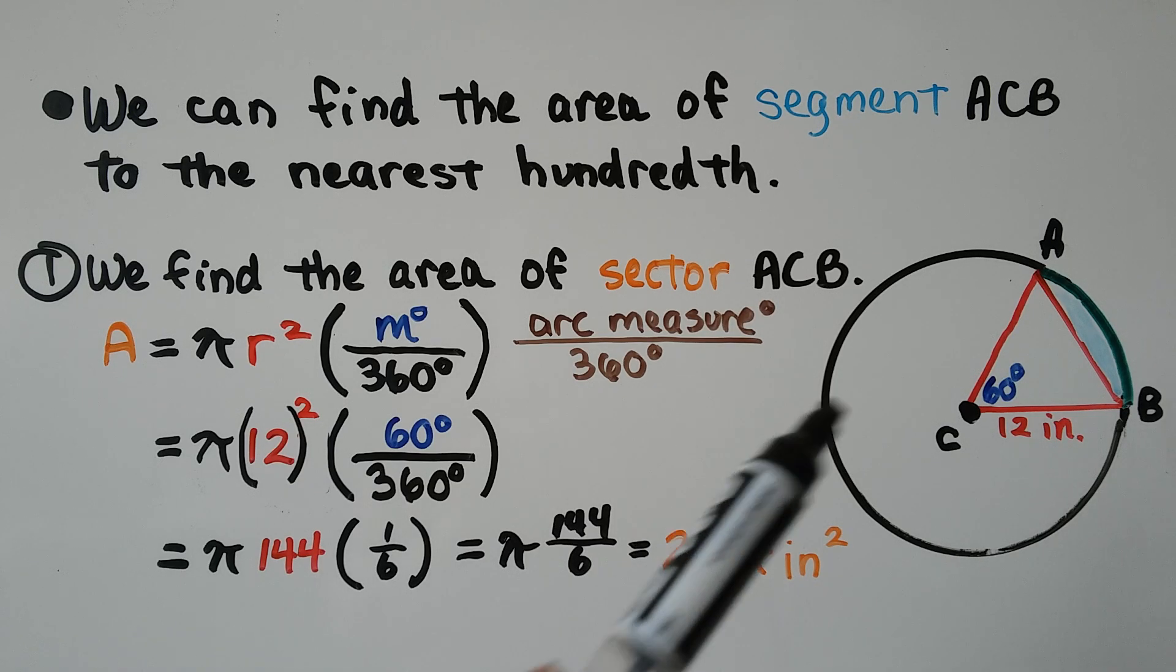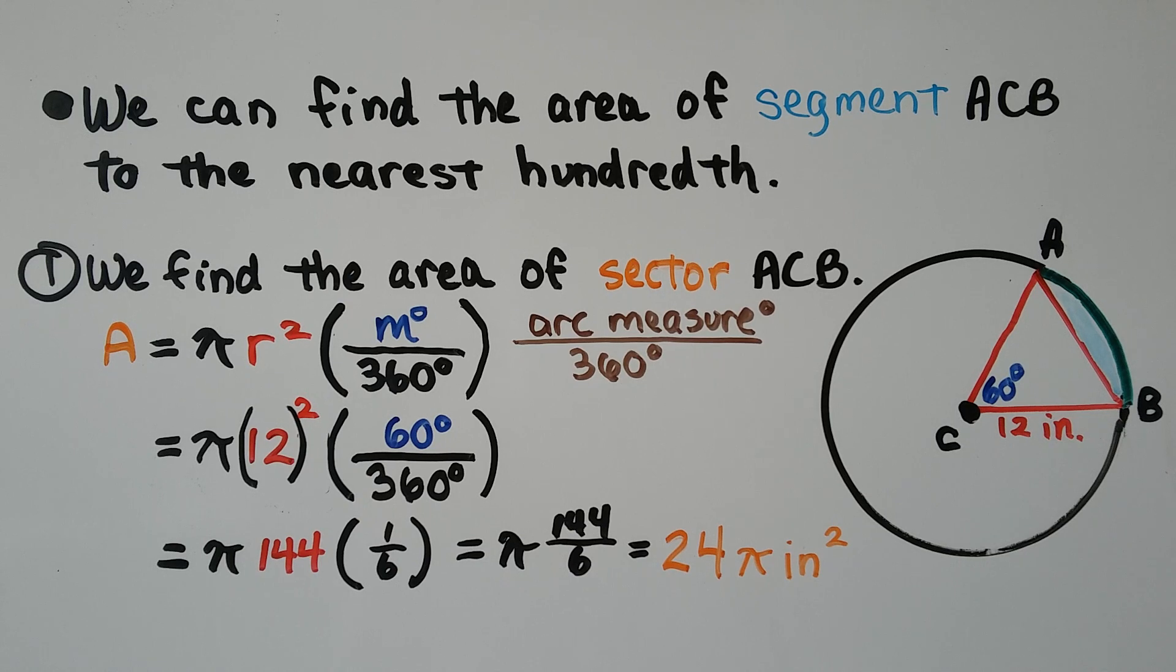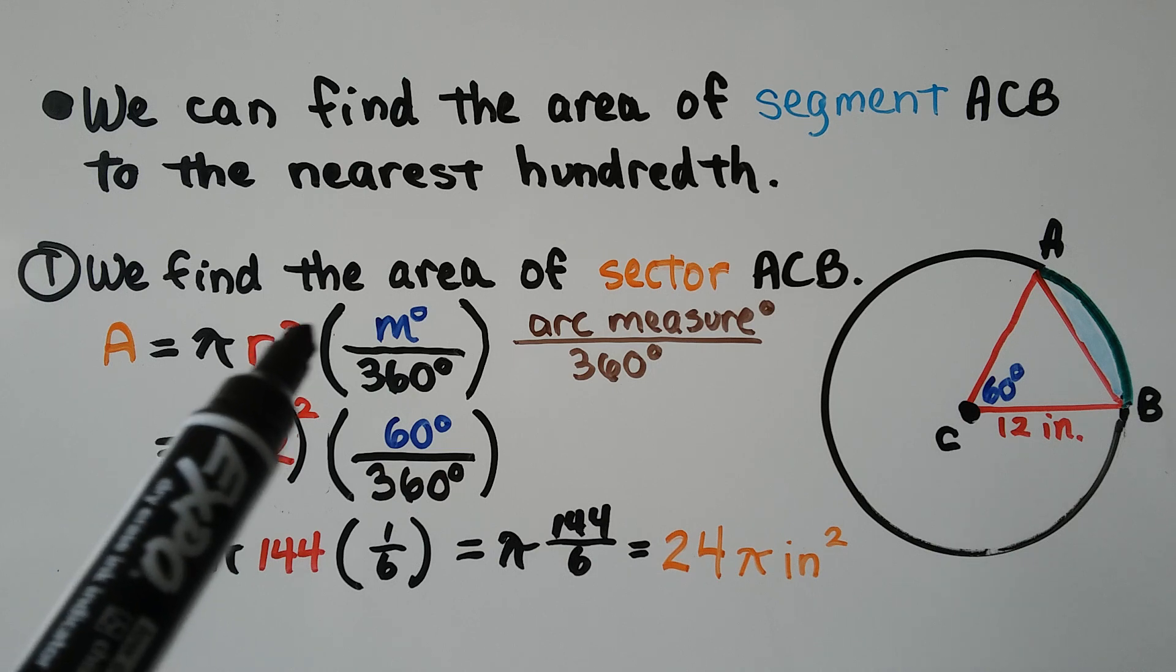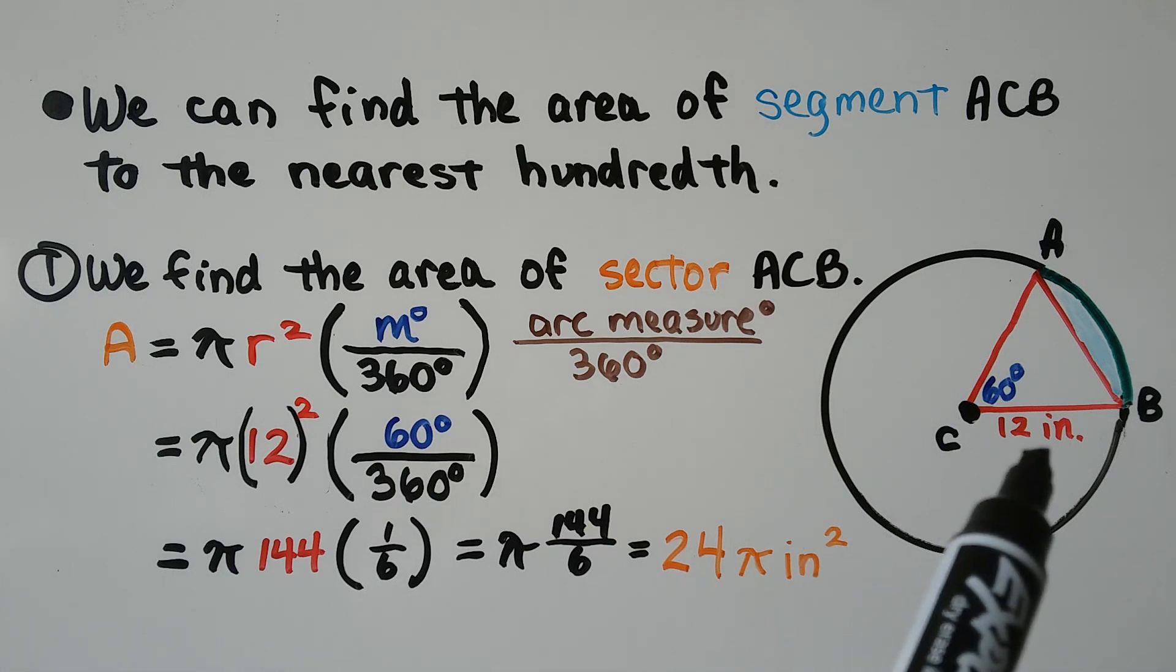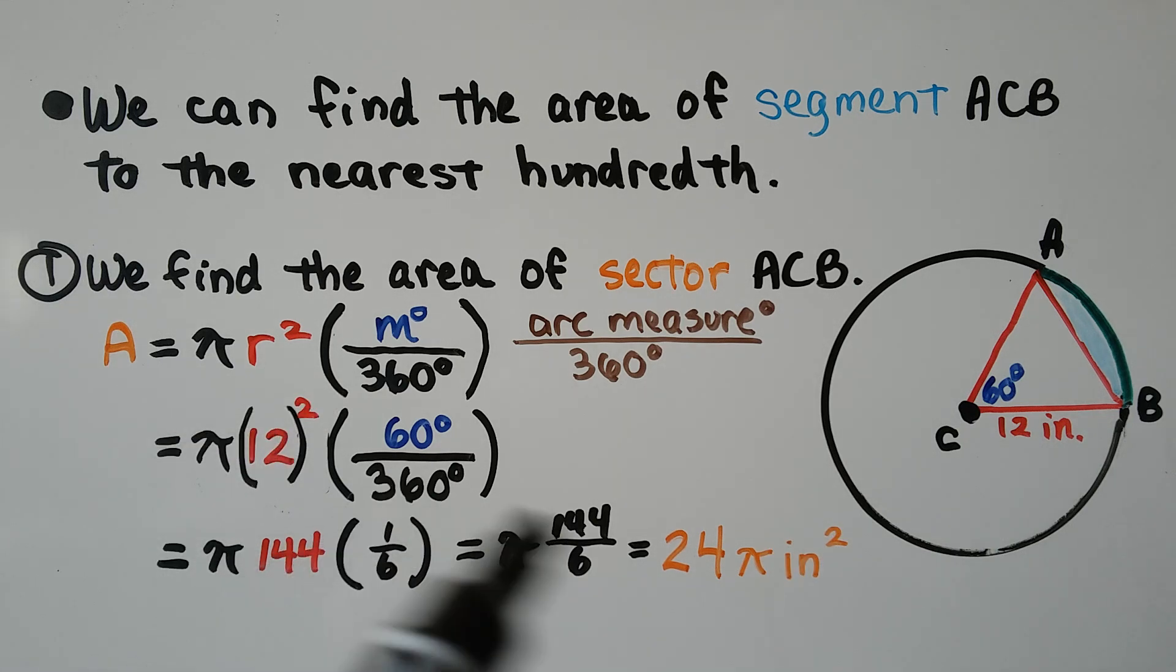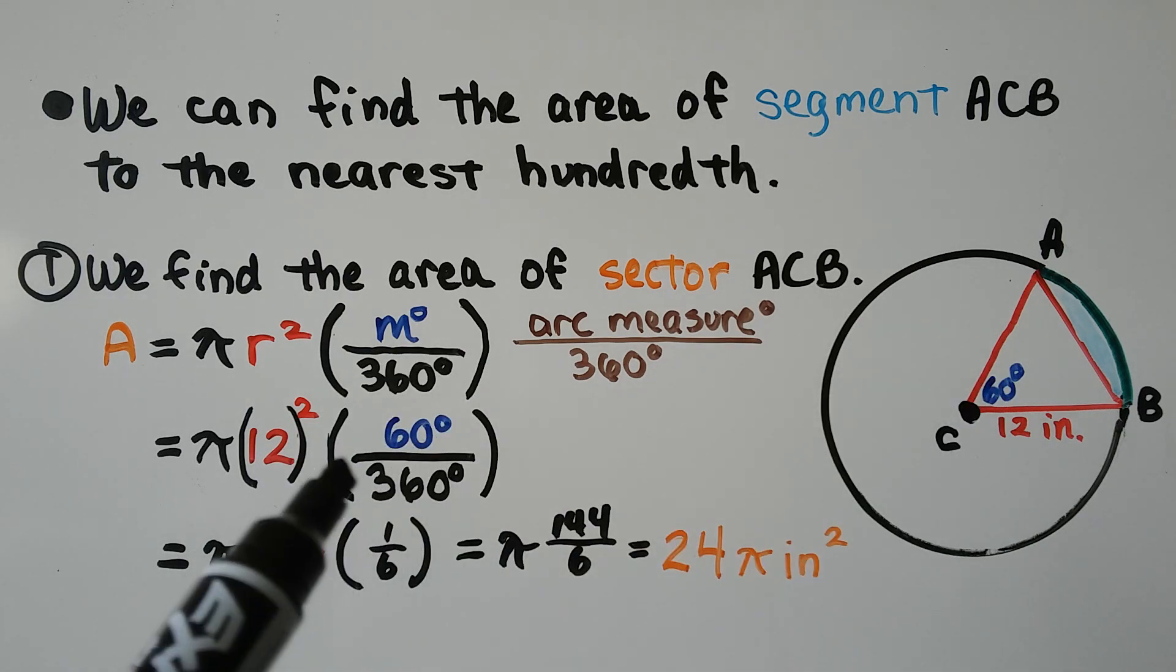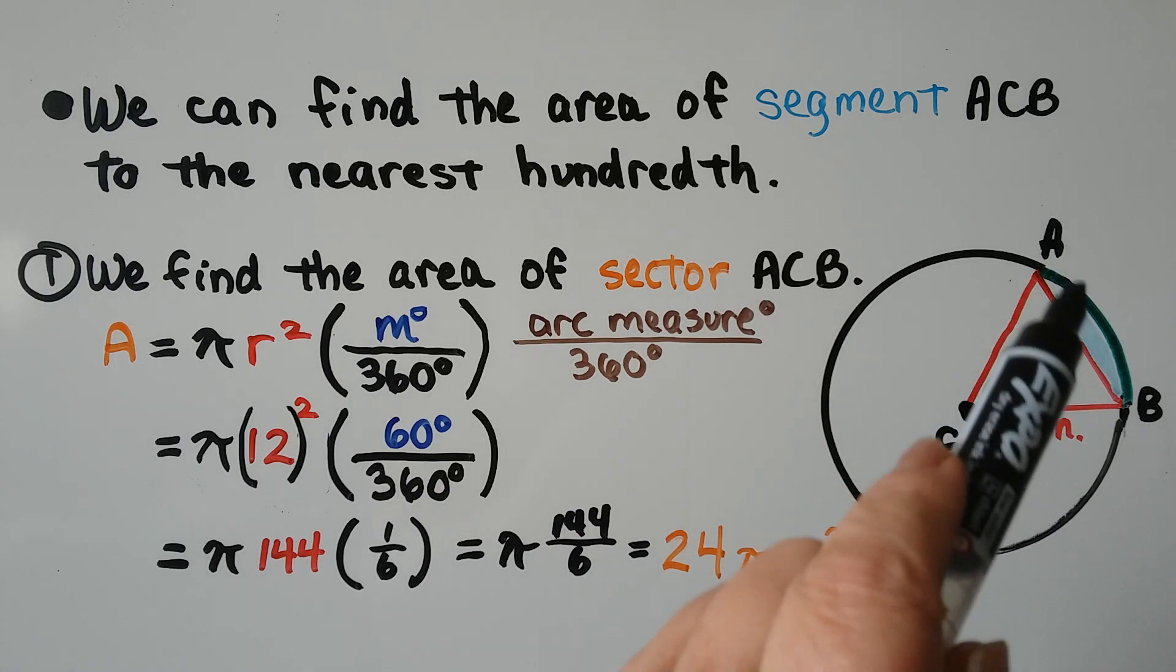We can find the area of segment ACB to the nearest hundredth. The first thing we do is find the area of sector ACB. We use our formula that the area is equal to pi radius squared times the quotient of that arc measure and 360 degrees. We can see this is 12 inches, so our radius is 12 inches. We have 12 squared, that's 144. And we have our measure, 60 degrees over 360. Well, that's 1 sixth. We do our math and we get 144 over 6 times pi. That gives us 24 pi inches squared. And that's for the entire sector, not for this blue segment.